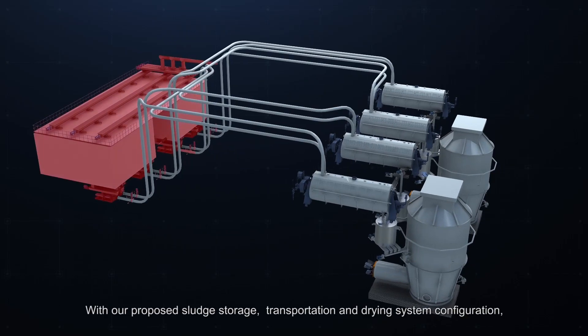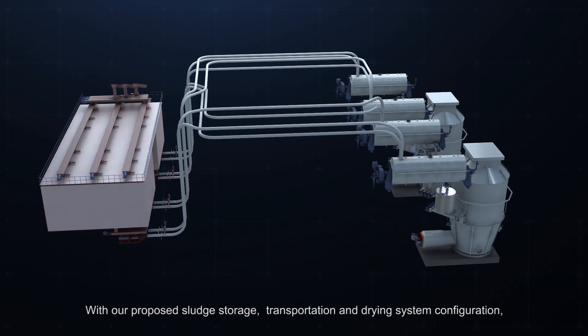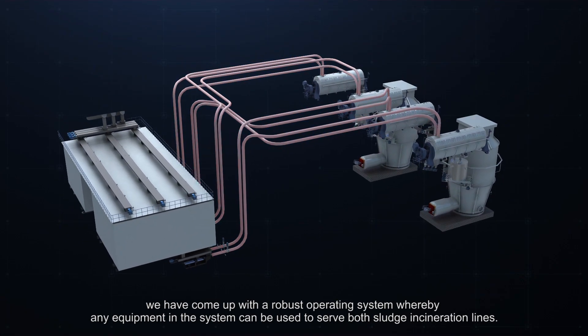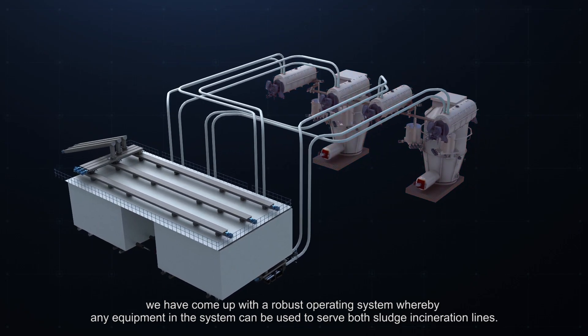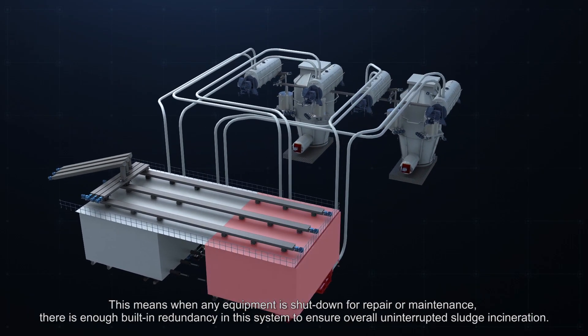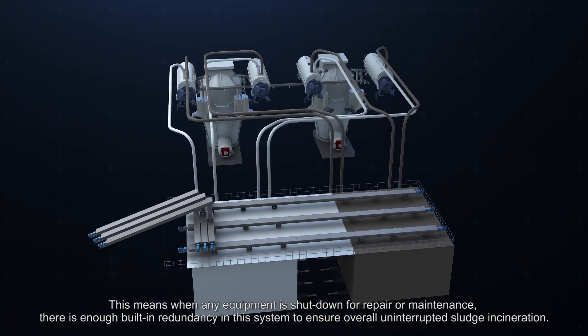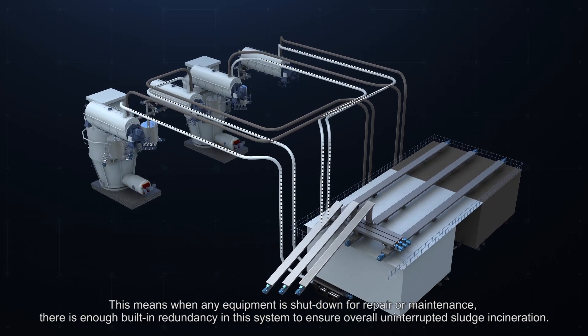With our proposed sludge storage, transportation and drying system configuration, we have come up with a robust operating system whereby any equipment in the system can be used to serve both sludge incineration lines. This means when any equipment is shut down for repair or maintenance, there is enough built-in redundancy in this system to ensure overall uninterrupted sludge incineration.